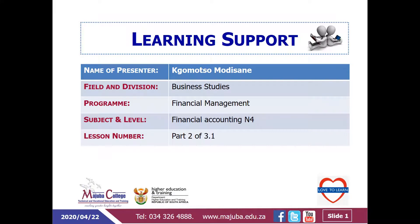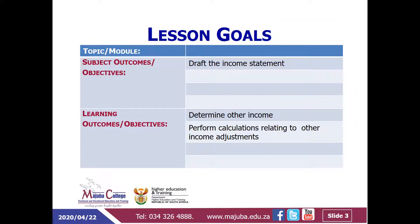Hi, this is KMOT. This is a continuation of a presentation on the income statement relating to financial accounting N4, for the question paper written on the 10th of June 2016. For ease of reference, I'd like to refer to this presentation as Part 2 of 3.1. I'm going to deal with the income statement, specifically focusing on the determination of other income. At the end of this presentation, students will be able to draft the income statement, determine other income items, and perform calculations relating to other income adjustments.